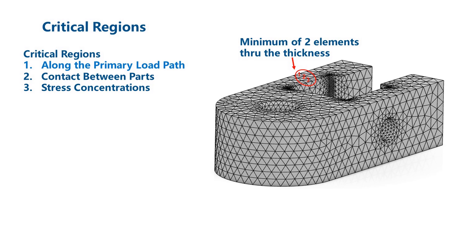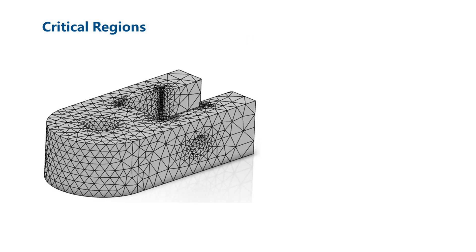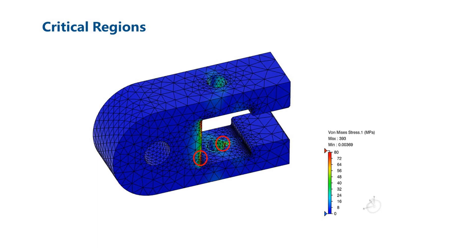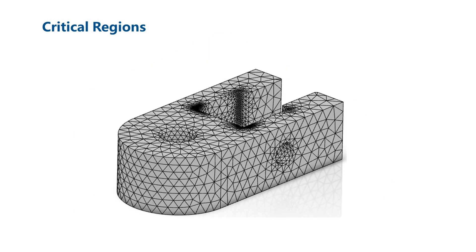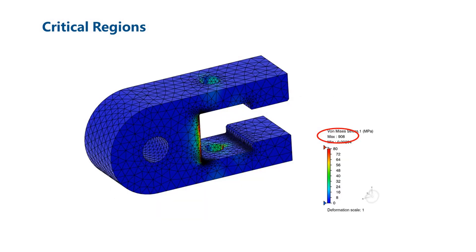One of the quickest ways to identify the critical regions is to run a model with a relatively coarse mesh. This model is quite coarse but will solve quickly and will help us identify the critical areas of the part. We can quickly see the highest stresses occur in the hole where the pin contacts the lug and on the edge where the lug contacts the adjustment bar. If we set the maximum value of the Von Mises stress contours to a relatively small value, we can also quickly see the regions of the model which are located in the primary load path. Any region colored red is in the primary load path for the part. We can apply the knowledge gained from reviewing the coarse mesh results and the general recommendations to design our mesh for the lug part. The locations of highest stress have not changed; however, the peak stress has increased from 393 MPa to 908 MPa.